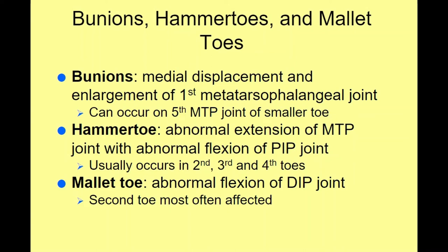Bunions are the medial displacement and enlargement of the first metatarsophalangeal joint — where the metatarsal and phalangeal bones combine at the big toe. The joint enlarges and extends out medially. A similar condition can occur at the small toe joint, pushing out laterally. Hammer toes are abnormal extensions with abnormal flexion, usually in the second, third, or fourth toe.